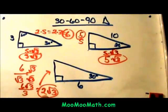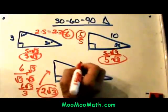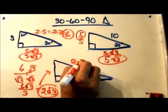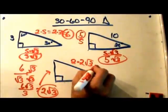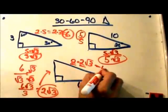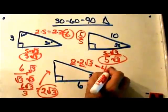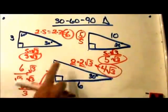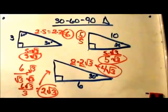Now that I have my short leg I can just double that or multiply by 2 to get the hypotenuse. So 2 times 2 root of 3 is just 4. You don't change the radical it stays the same. So the hypotenuse is 4 square root of 3.